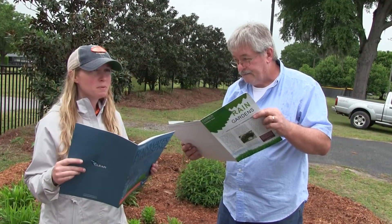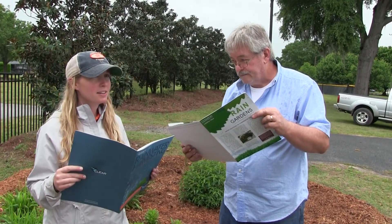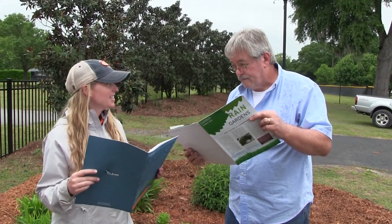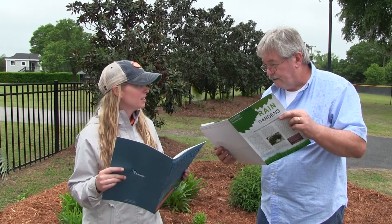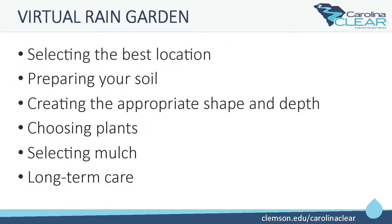The Clemson Extension Virtual Rain Garden is a tool that will take you through the process of creating a rain garden. The virtual rain garden will guide you in selecting the best location for your rain garden, preparing your soil, creating the appropriate shape and depth, choosing plants for your rain garden, selecting mulch, and long-term care.